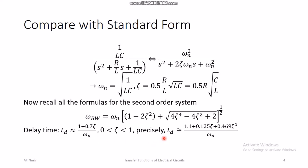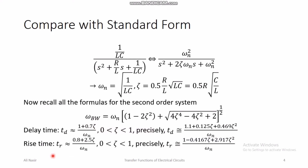Similarly, from the time domain performance specification lecture for second-order systems, there are formulas for percentage overshoot, delay time, rise time, and peak time. The main point is that once you obtain the transfer function of an RLC circuit and express it in terms of its parameters, you can calculate all of its properties.